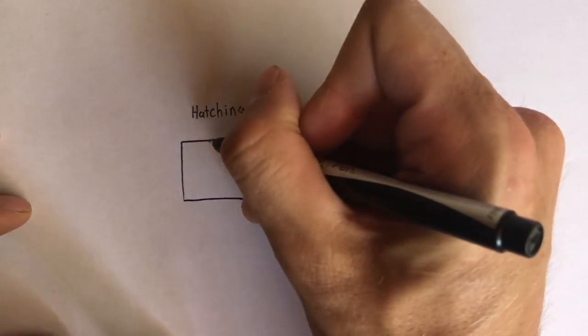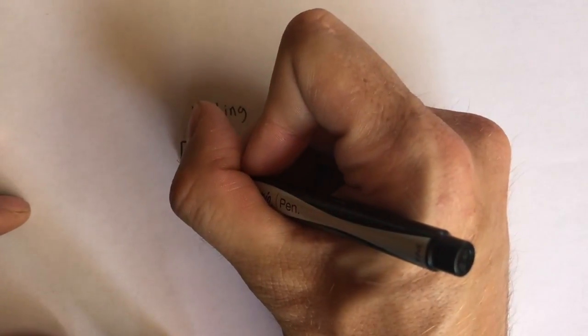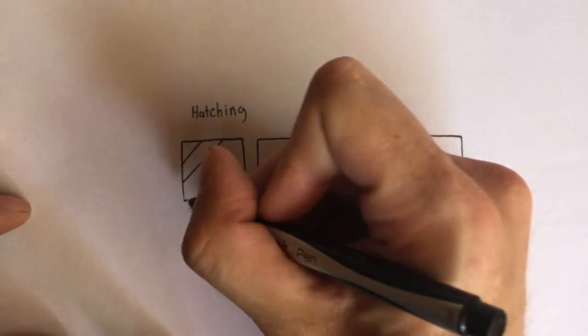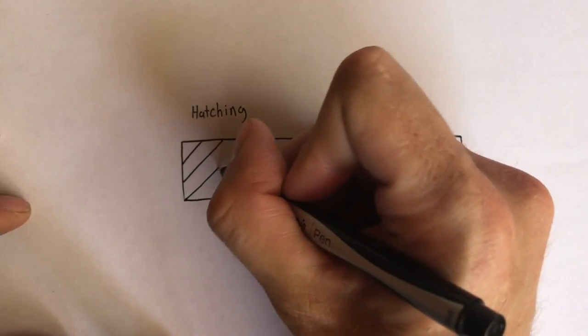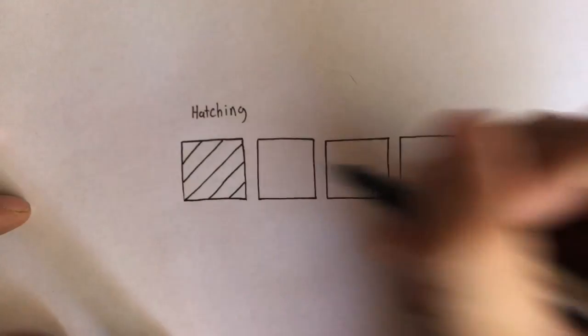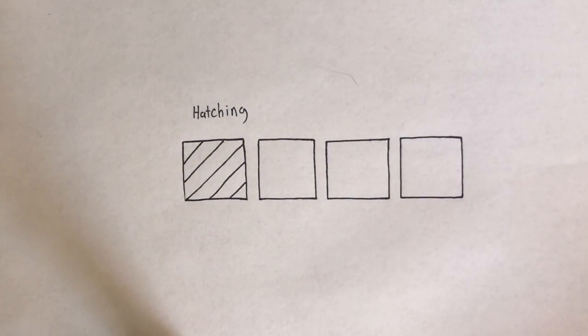So just watch what I'm going to do. I'm going to put five or six lines, all going in the same direction, evenly spaced apart, as close as I can. I just got to kind of eyeball it. Just like that. So those would be considered hatching lines.